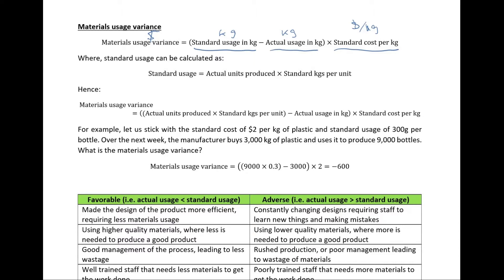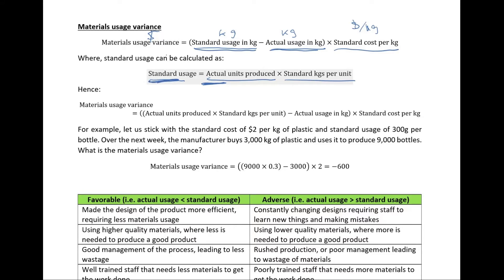Kg is just a placeholder — it could be liters, meters, whatever. Standard usage sometimes needs to be calculated because actual usage we can find based on how many Kgs we bought and used in our process. Standard usage we might need to calculate based on how many units we actually produced multiplied by the standard Kgs per unit. We take our number of units and multiply by Kgs per unit to get the standard usage. Remember, it's actual units produced, not the budgeted units produced — we're looking for the standard amount, which is actual into standard.